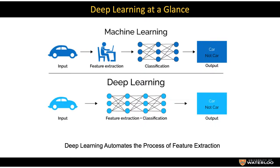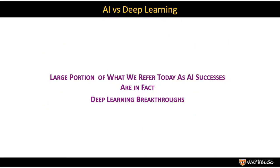Deep learning automates the process of feature extraction, which is one of the most difficult components in machine learning. What we refer to today as AI successes in various applications are in fact deep learning breakthroughs — most of what we hear today are deep learning type algorithms applied to specific industrial sectors.